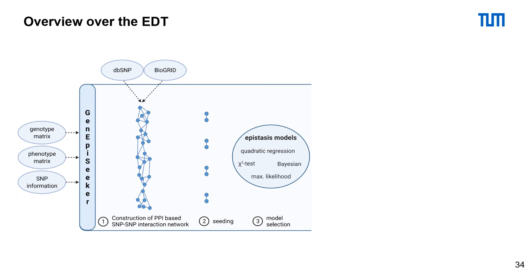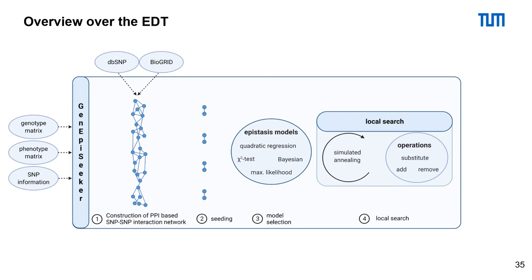We also implemented a majority vote, which can use all four models to determine the best scoring SNPs. After the selection of the statistical model, GenEP Seeker uses local search to determine the best scoring SNPs on the network. We support the operations add, remove, and substitute to alter possible SNPs. To overcome local increases of the score, we use simulated annealing.